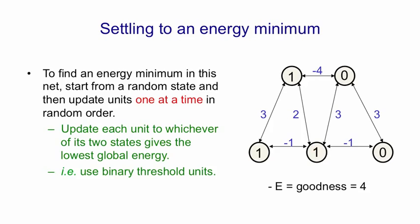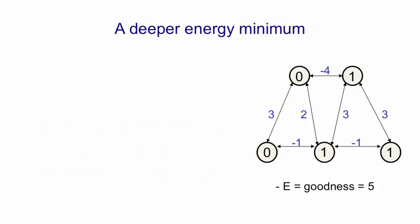If you now try probing any of the units, you'll see that they don't want to change their current state. The net has settled to a minimum. However, the minimum it's settled to is not the deepest energy minimum. It's just one of two minima that this net has. The deepest energy minimum is shown on the right here, and it's when the other triangle of units that support each other is on. That has a goodness of three plus three plus minus one is five, so that's a slightly better energy minimum.